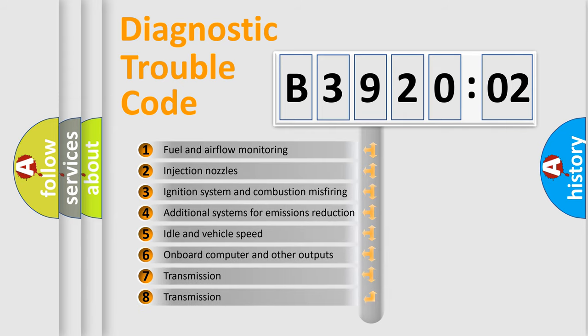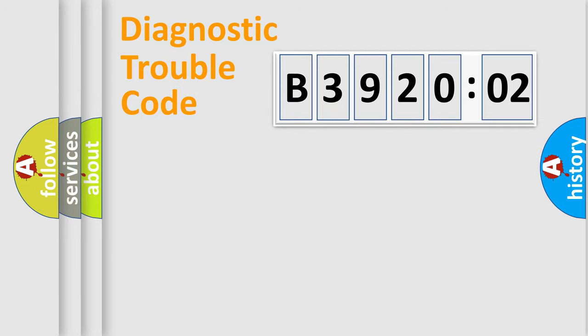The third character specifies a subset of errors. The distribution shown is valid only for the standardized DTC code. Only the last two characters define the specific fault of the group.